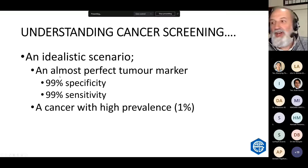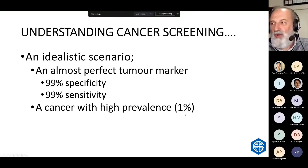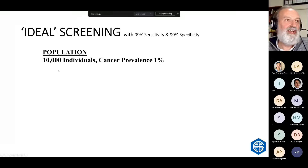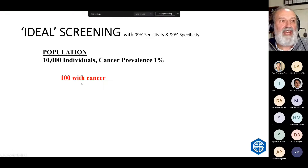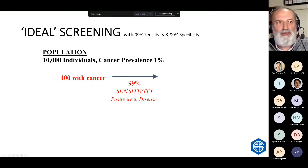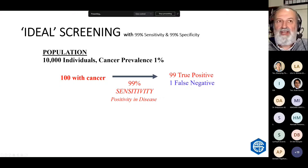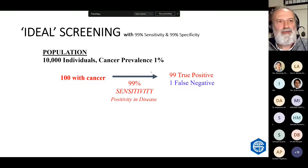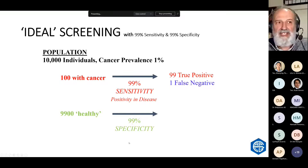I'm going to tell you now why screening virtually never works as we hope. Consider: I've invented a new tumour marker that is 99% specific and 99% sensitive, used for a cancer with a community prevalence of 1 in 100. Applying it to 10,000 people: the 100 people with cancer give 99 true positives and 1 false negative. The 9,900 healthy people give 9,801 true negatives and 99 false positives.